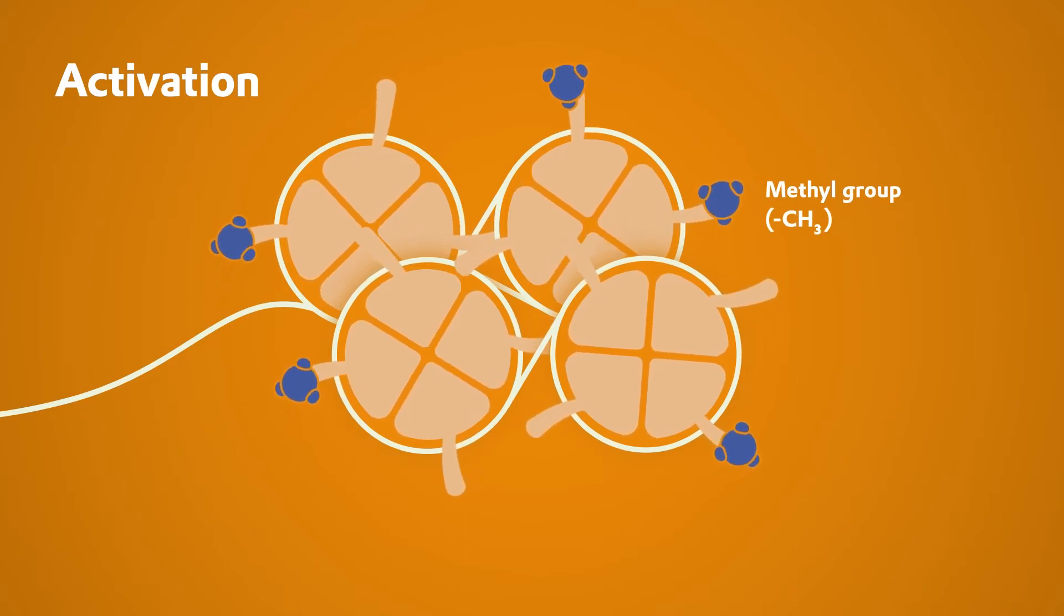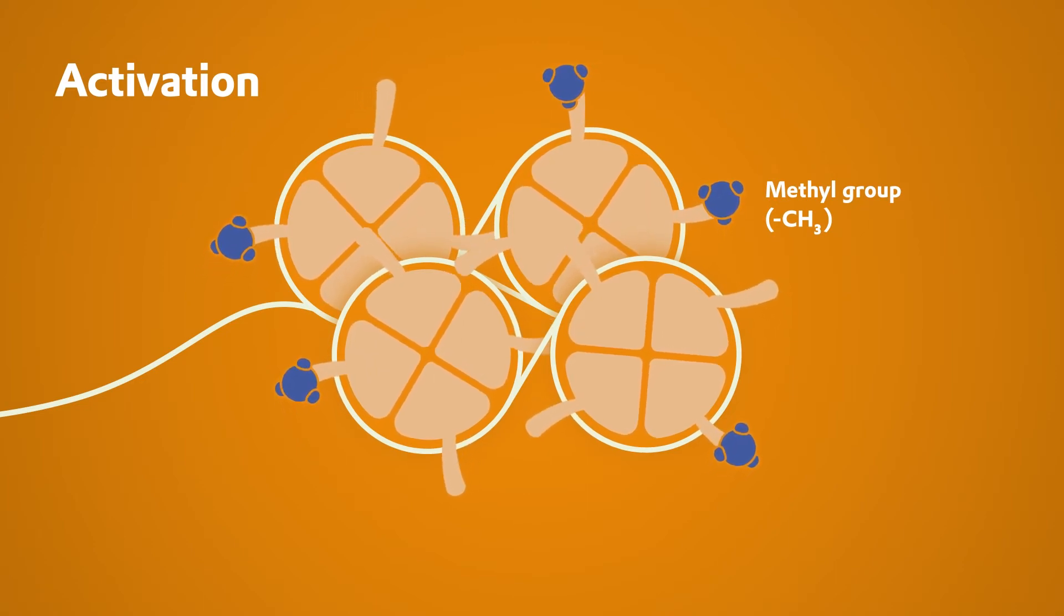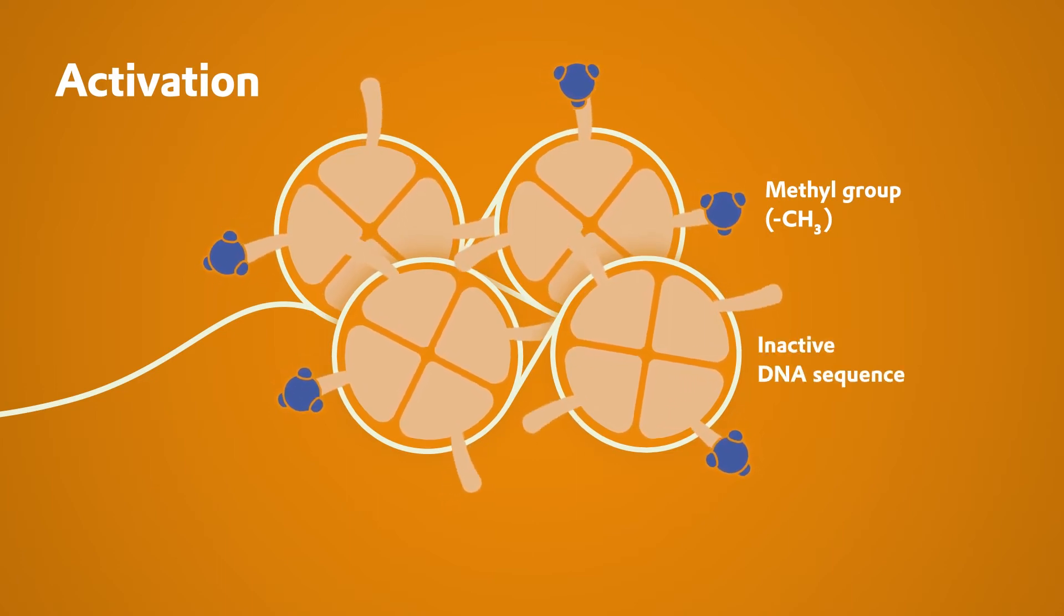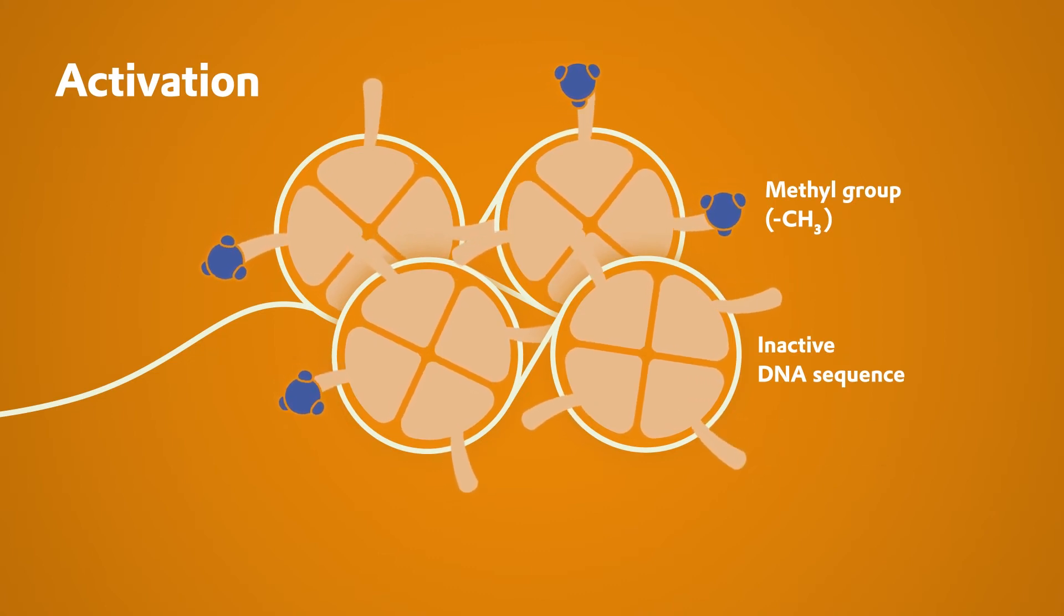Bound methyl groups prevent a gene from being read by specialized enzymes. In effect, they switch off the gene. If a histone has no methyl groups, the DNA sequence wrapped around it is active and thus readable.